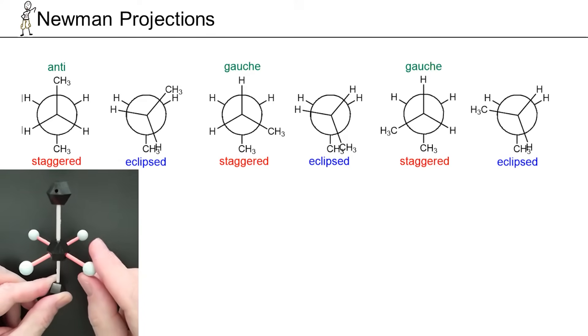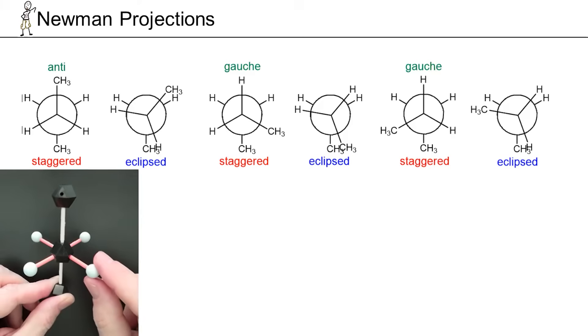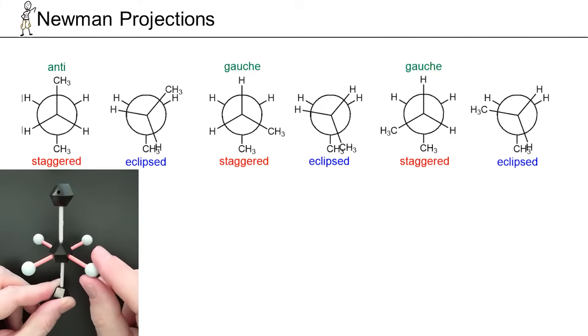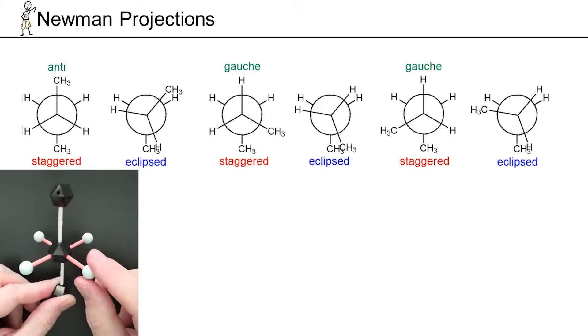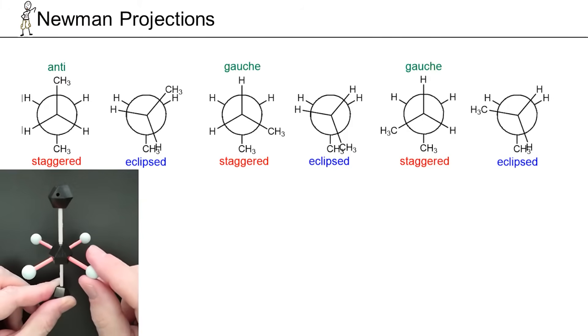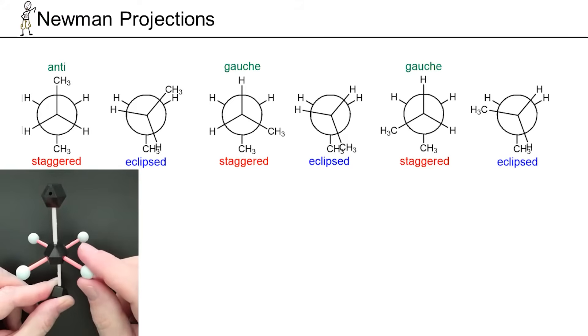There's an infinite number of possible conformations, and out of that infinite number, we only really draw six of them — we go to the extremes. Those would be the high-energy and low-energy extremes, and the staggered conformations are the lower-energy extremes.